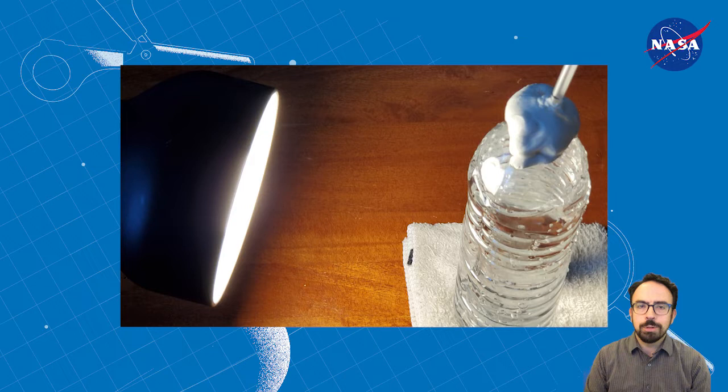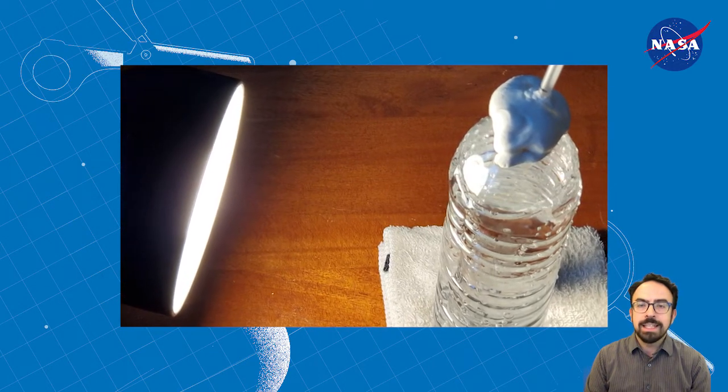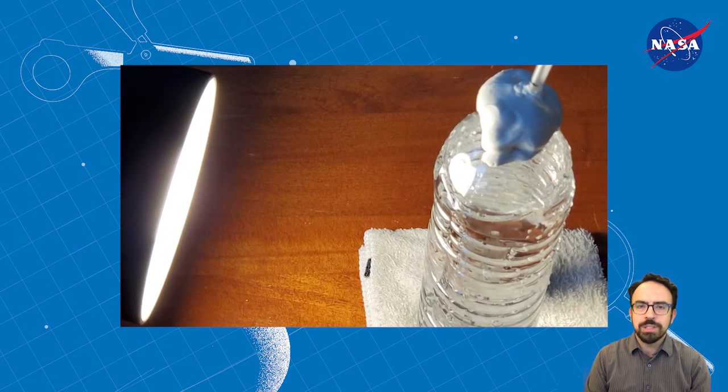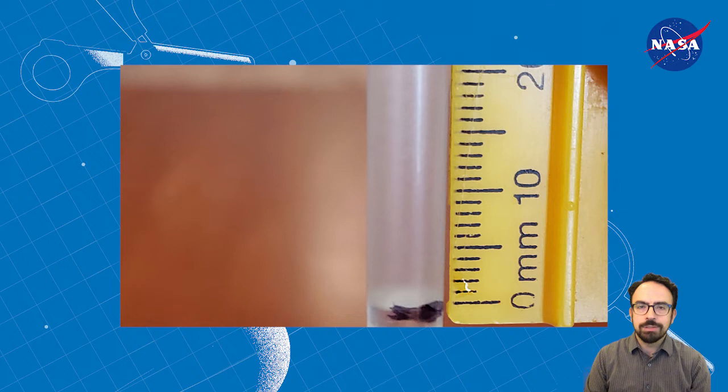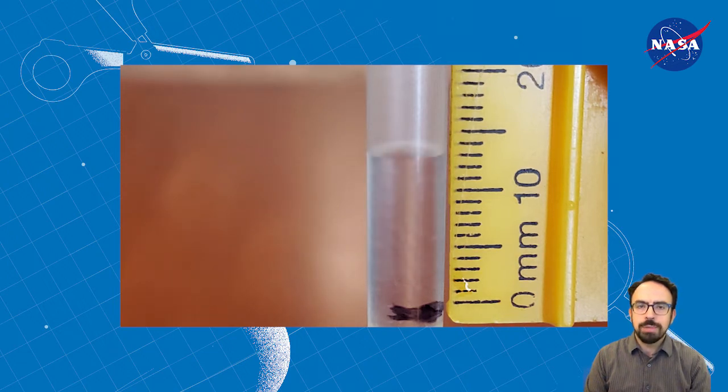Now it's time to apply heat. Because different heat sources apply heat with different intensities, it's important to keep watching the water bottle to make sure the heat isn't damaging it. At regular intervals, maybe every minute or every five minutes depending on how strong the heat source is, measure and record the water level in millimeters starting from the zero mark you made on the straw.